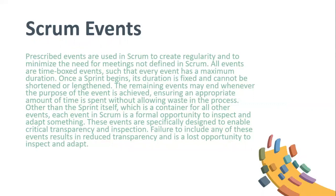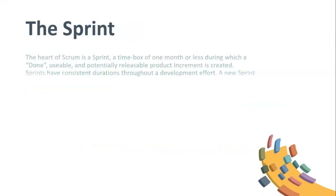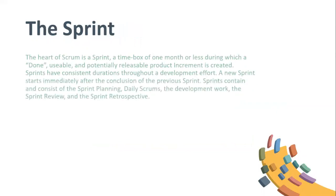Other than the sprint itself, which is a container for all other events, each event in Scrum is a formal opportunity to inspect and adapt something. These events are specifically designed to enable critical transparency and inspection. Failure to include any of these events results in reduced transparency and is a lost opportunity to inspect and adapt.